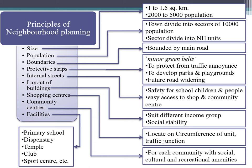The population should be 2,000 to 5,000 — it should not be more than 5,000. The population is divided on a hierarchy: your total town is divided into sectors of 10,000 population, and each sector is further divided into neighborhood units containing 2,000 to 5,000 people. One neighborhood may contain 3,000 and another 5,000 — it may vary, but the population should always be within 2,000 to 5,000 only.